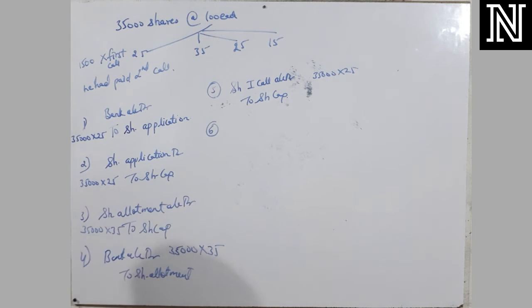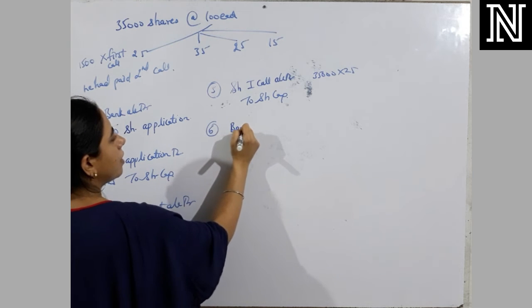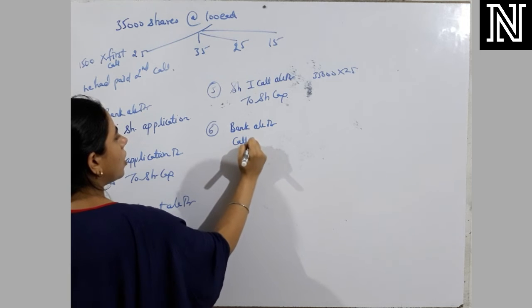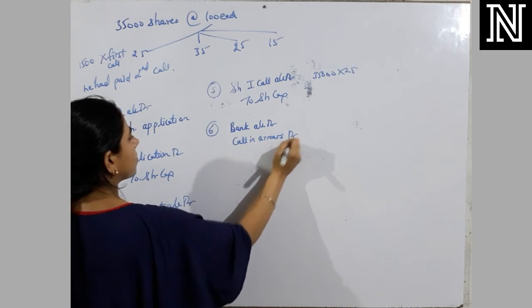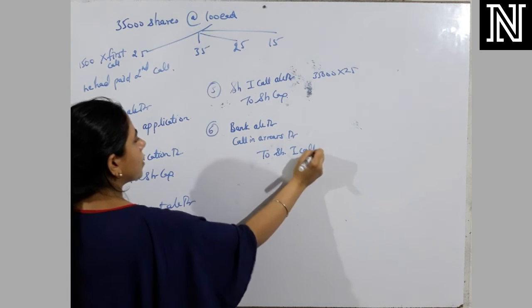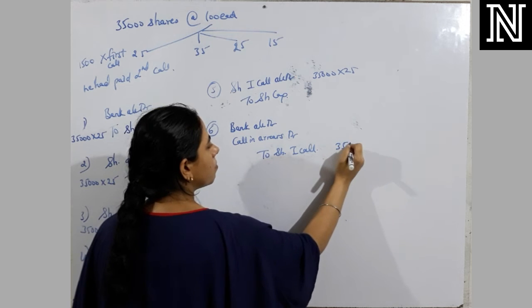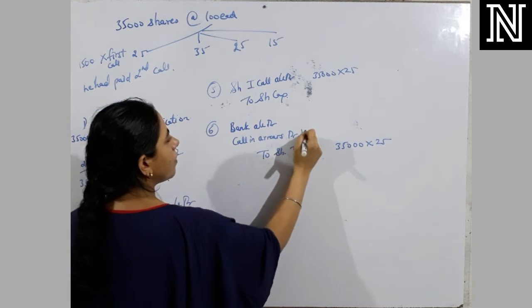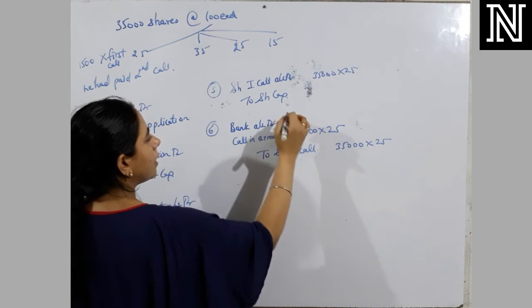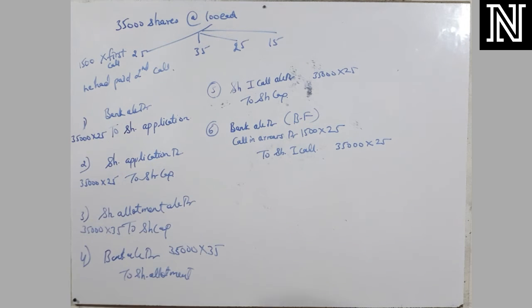Sixth entry, when received. One of the shareholders is unable to pay the money. So when he is unable to pay the money, then what we are going to open at that time? Call in arrear. Debit or credit? Debit. So our entry will be bank account debit, call in arrear account debit, to share first call. First call, we will write full amount by all the shares. But now 1500 were not paying the money. So that will be coming under call in arrear. And bank, it will be balancing figure. Leftover amount will be going to come in bank. Now tell me this entry is clear to everyone.